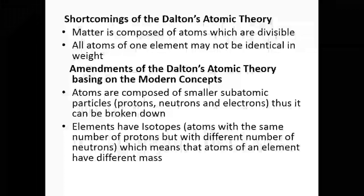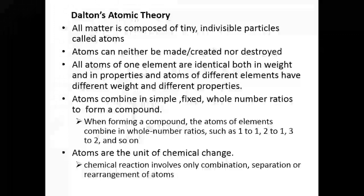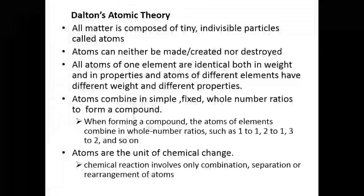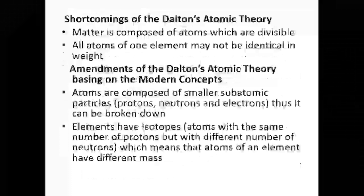If people had stayed with Dalton's theory until today, science would not have advanced. Other scientists took Dalton's ideas and continued making investigations. They confirmed that matter is composed of tiny individual particles — as Dalton said — but found that these individual particles can be divided by nuclear fission. They also found that atoms can be made and destroyed, contradicting Dalton's postulate. These were shortcomings of Dalton's atomic theory: matter is composed of atoms which are divisible, and all atoms of one element may not be identical in weight.